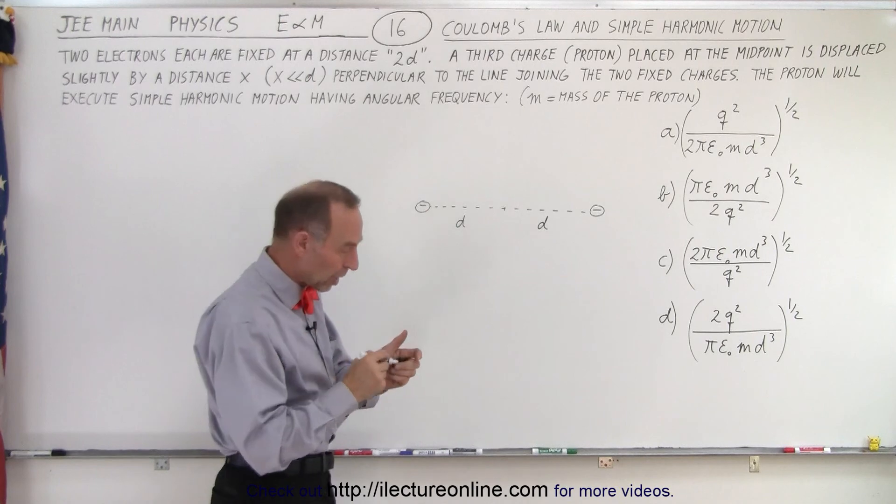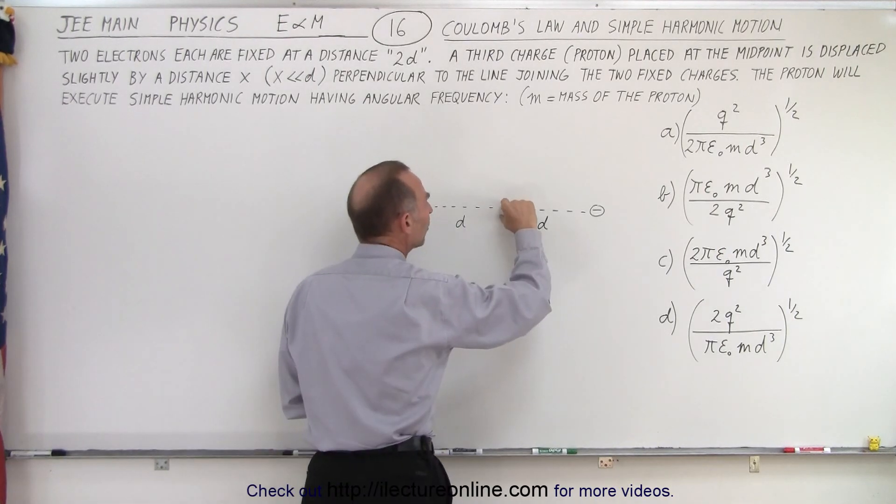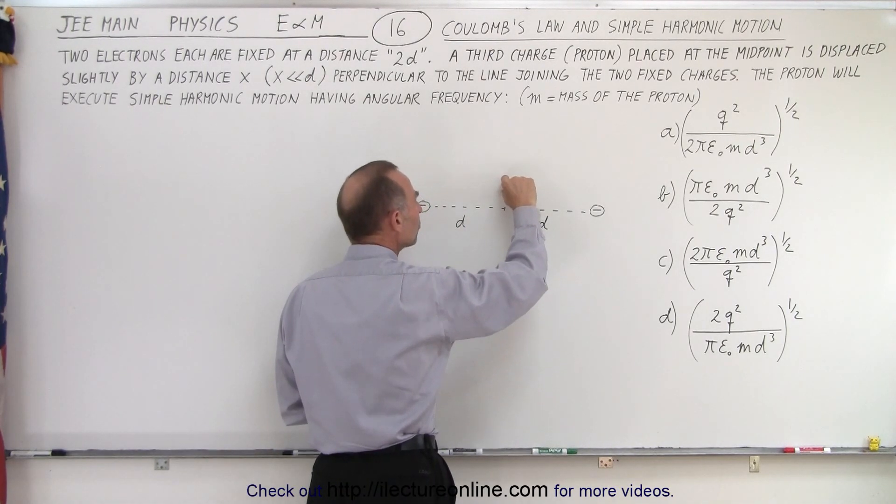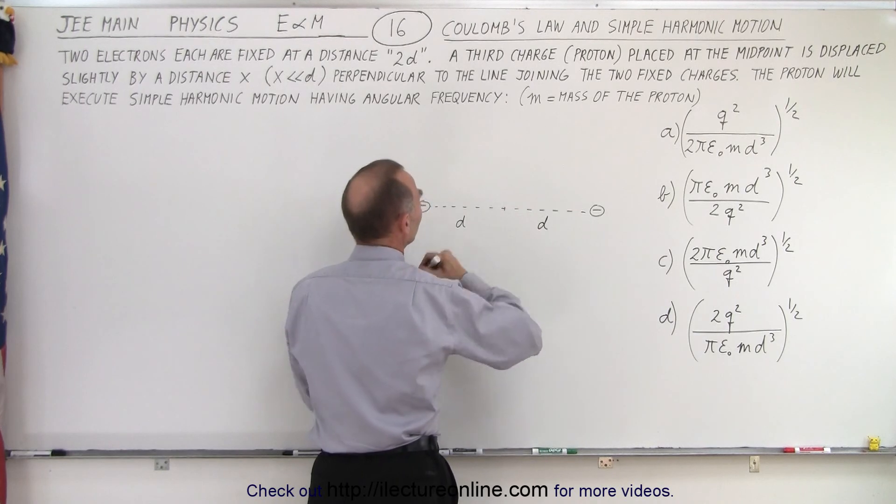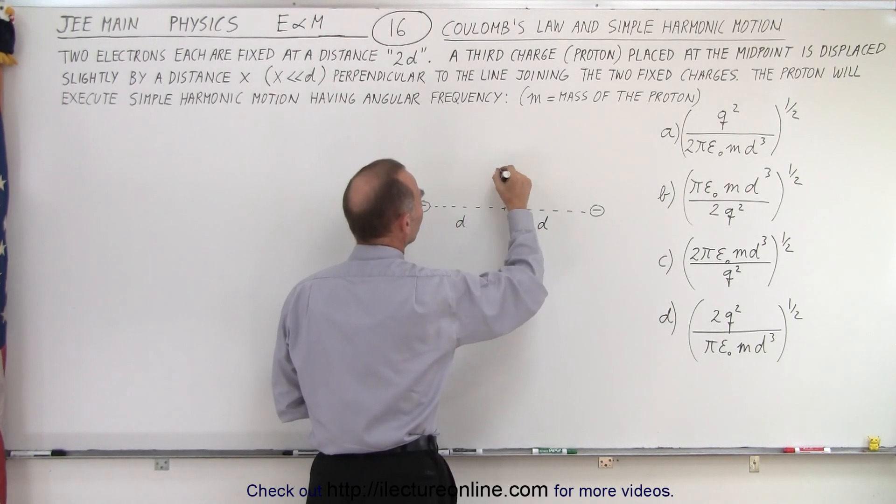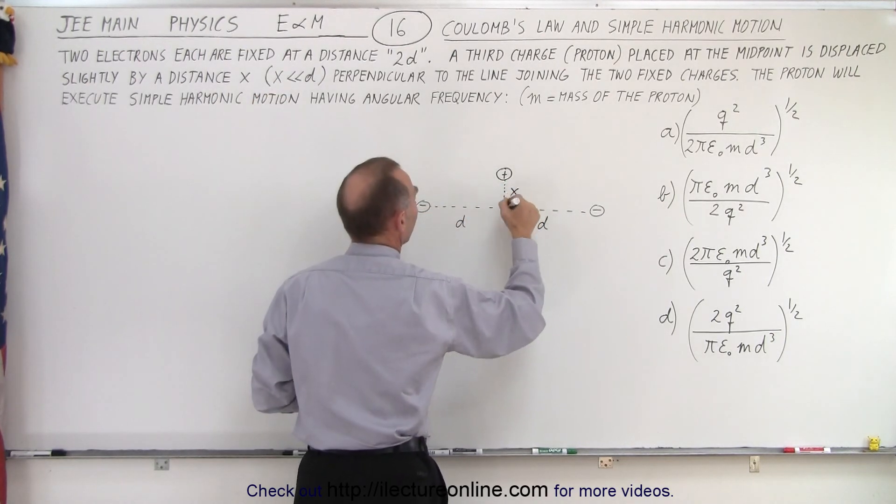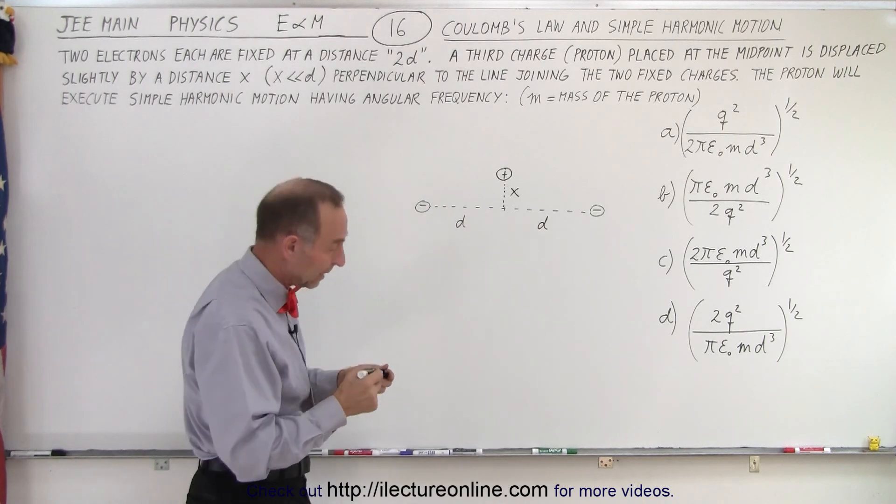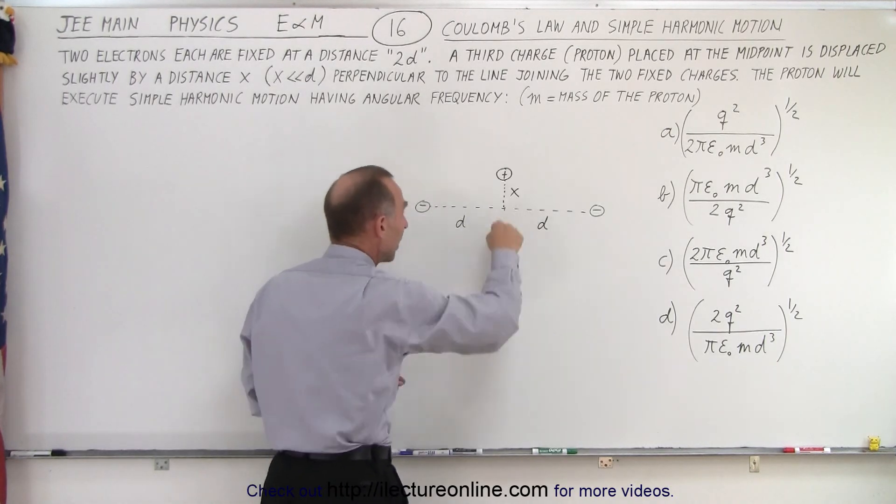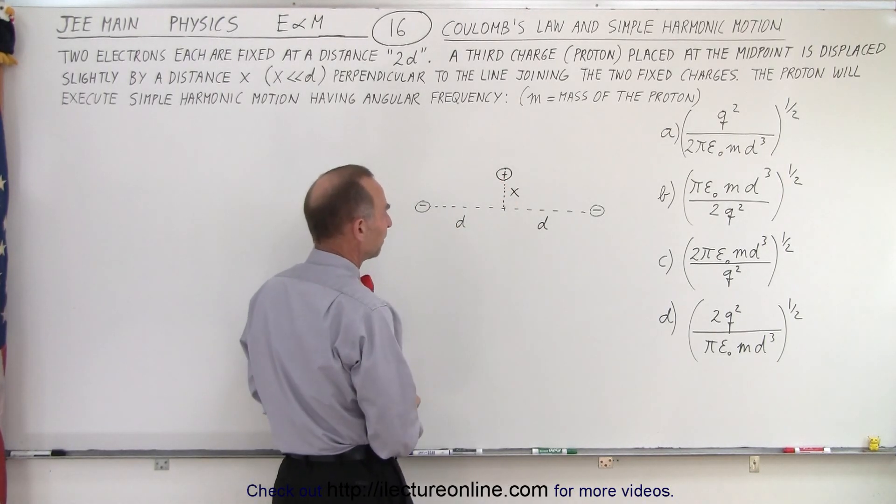Then a proton is placed at the halfway point and displaced a small amount of distance. So let's go ahead and put the proton over there, and let's say that this distance right here, we'll call it X. That's a small amount of displacement. And then if we let go, the proton would then go back and forth like this.